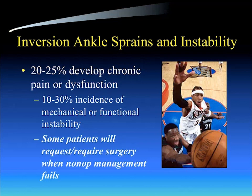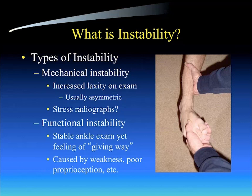About 10% to 30% of people sustaining an ankle sprain will develop mechanical or functional instability. And some patients, unfortunately, will not do well with nonoperative management, will have chronic dysfunction, oftentimes due to persistent inversion instability, and will actually request or require surgical intervention.